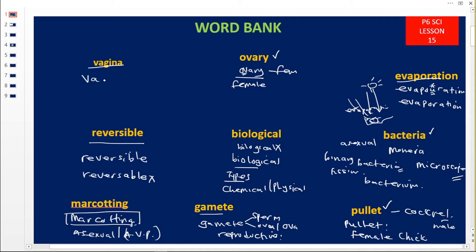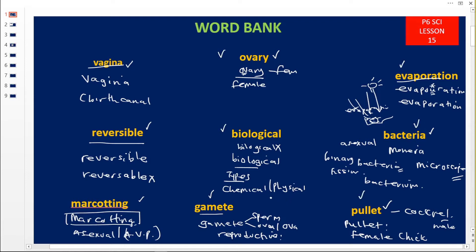Lastly we have the V word, vagina. Some write 'virgin' — no, it is vagina. It is called a birth canal. So the words we read together are: vagina, reversible, marcoating, gamete, biological, ovary, evaporation, bacteria, and palate.